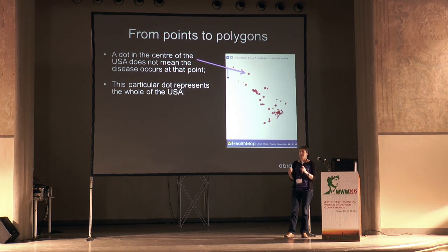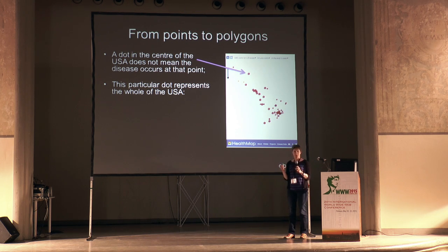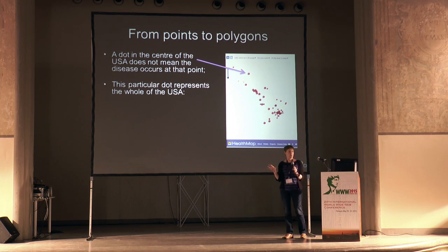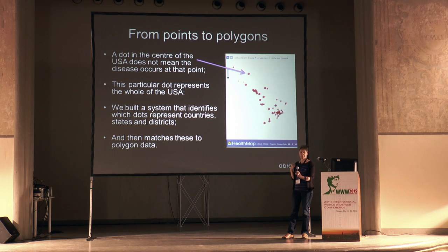The first task in doing this is we need to know whether a data point represents an infection occurring at a specific location or an infection occurring somewhere within a wider area. So we've built a system that classifies HealthMap data points according to the area they represent and then links them to polygon data that goes through to our models.